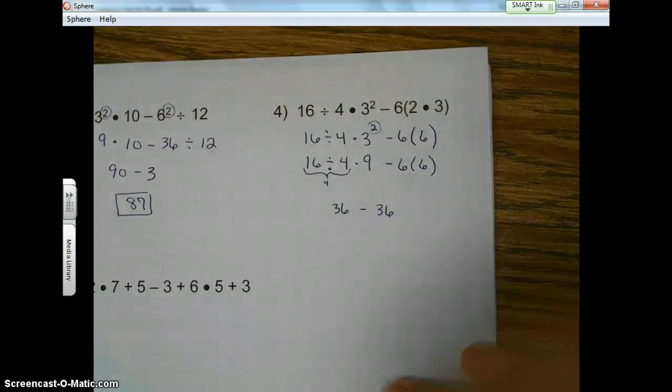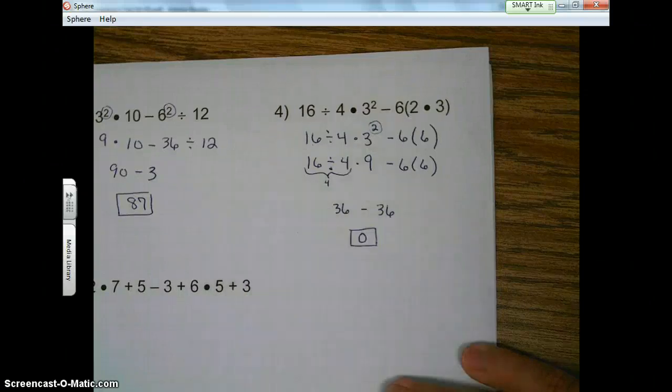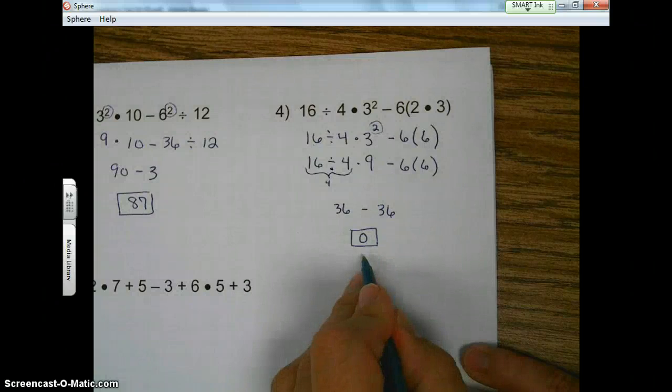Adding and subtracting. Well, all we have left is to subtract. 36 minus 36 is 0. Notice how I box my answers. Please do the same. Please show your work. Please box your answers.